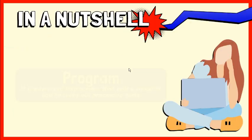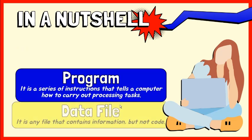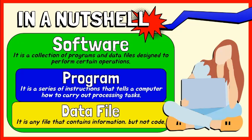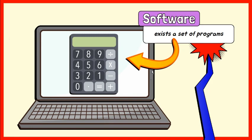In a nutshell, a program is a series of instructions that tells a computer how to carry out processing tasks. Data files contain information, but not code. These programs and data files form the software that sets up a computer to perform some operations. When a computer runs software, it performs the instructions to carry out the task. For example, this is the code of a program — it contains a function for addition operation, with a set of instructions like the required inputs, addition statement, and return statement.